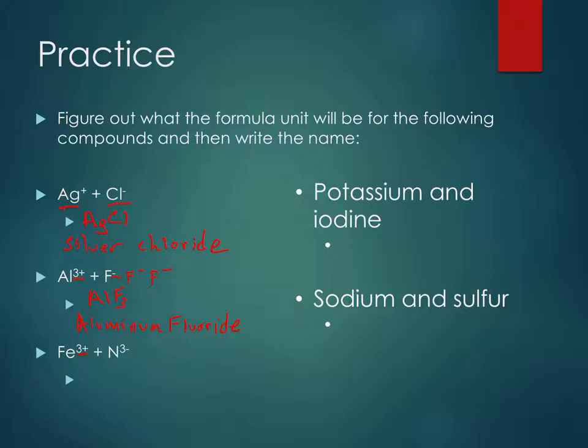Now here I have Fe three plus and N three minus. If you did the drop down one on here, you'd have to notice that they're the same value, so you need to reduce them down. So it should just be FeN. Now iron, that is a transition metal that can have multiple charges. So for the name, it'd be iron three nitride. Now note, the three is referring to the charge, not how many there are. The Roman numeral is always referring to charge, not the number of them in the compound.